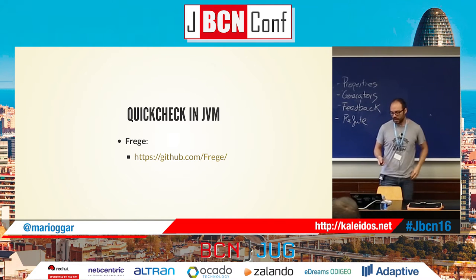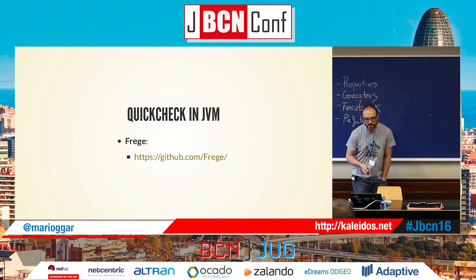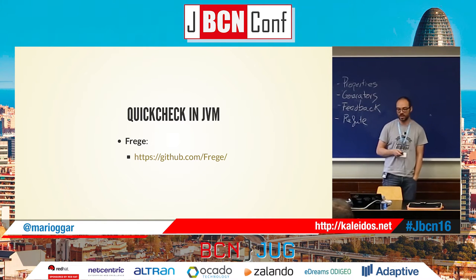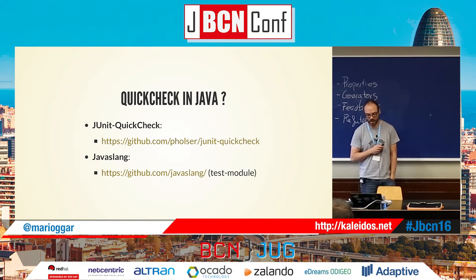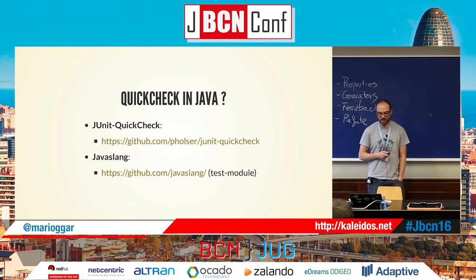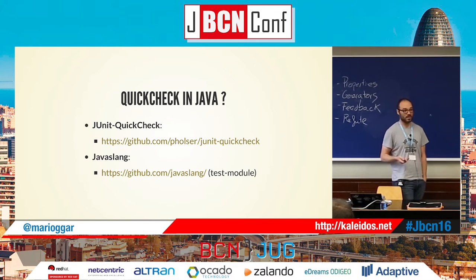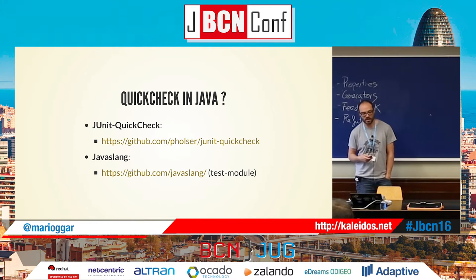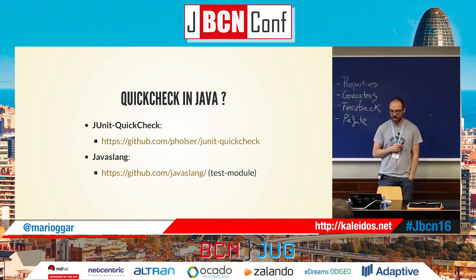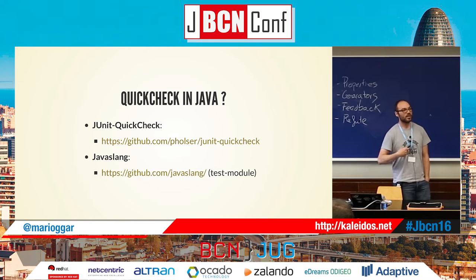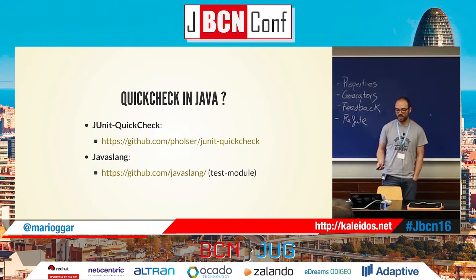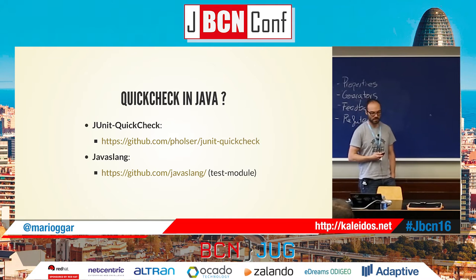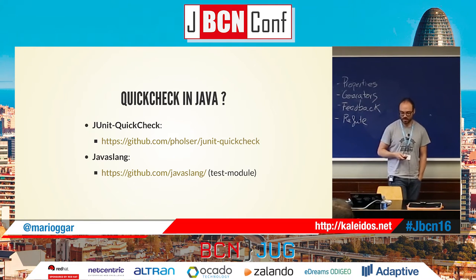Some alternatives in the JVM: of course you can go to the hard core — Frege is a Haskell implementation with a QuickCheck implementation. QuickCheck for Java — there is a library; I have used it, it's very nice for generating values. Also take a look at Javaslang — it's an amazing project, not only for the test module but for all of them.